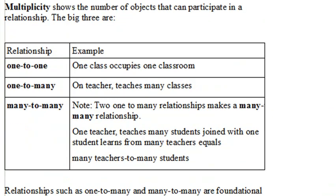A very important relationship, of course, is that of multiplicity. And the three big multiplicities are one to one, one to many, and many to many. Now you can think of one to one as one class occupies one classroom. One to many, one teacher teaches many classes. But many to many takes the combination of two one to many processes.